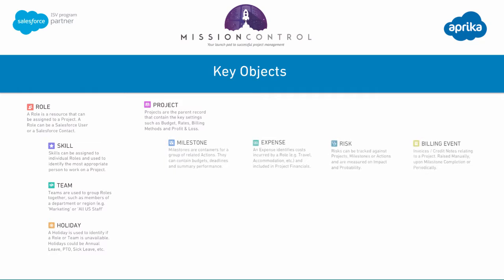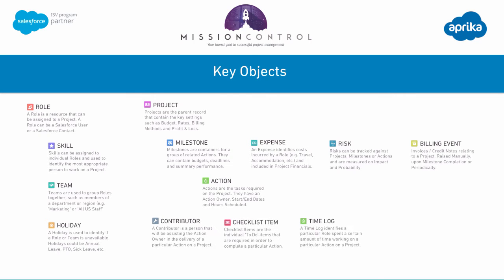Underneath the project, the four core objects are the milestone, the expense, the risk, and the billing event. The milestones are the containers for a group of related actions, and the actions are the individual items that people are responsible for that will be delivered on the project. Underneath those actions you can assign additional contributors to help the action owner, and you can build out checklist items which are individual to-do items that people can tick off as they're making progress. You can also track your time against the action.